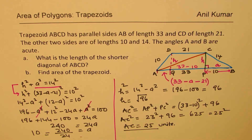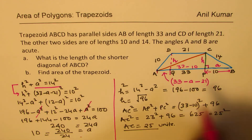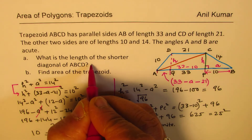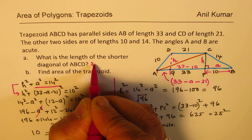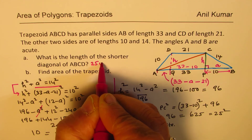That is how we find the shorter diagonal. The shorter diagonal is 25 units.